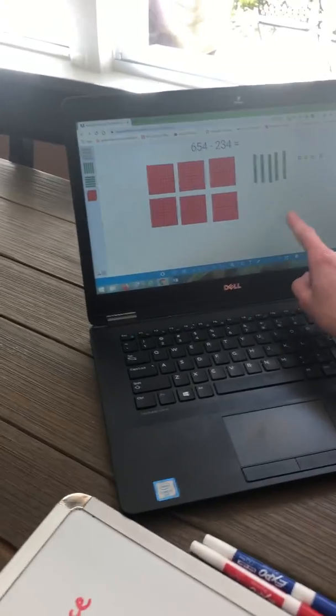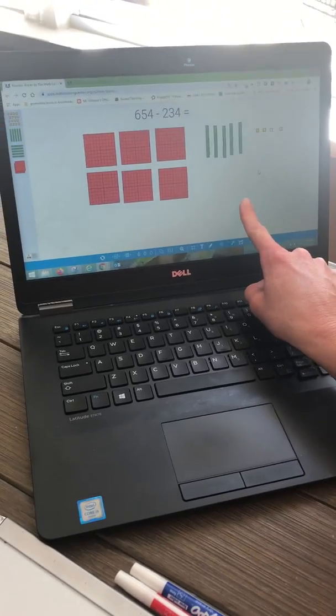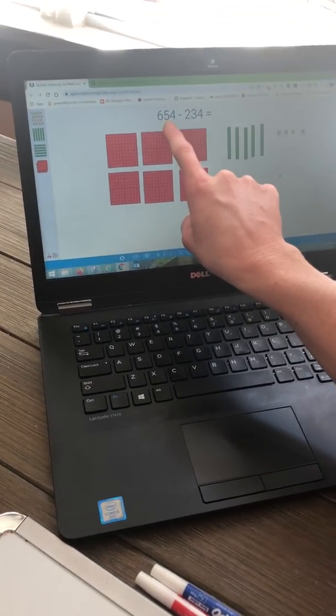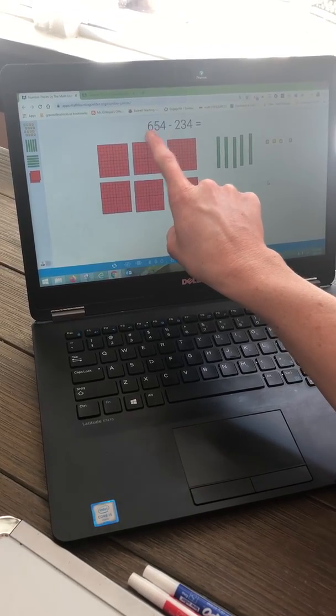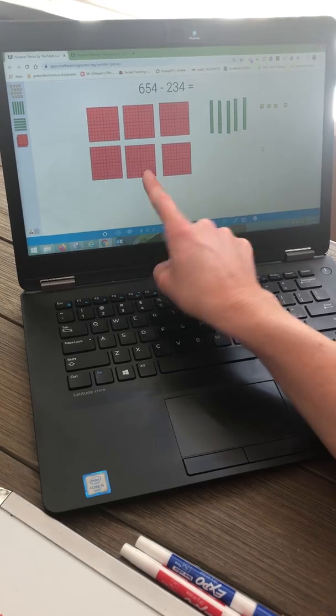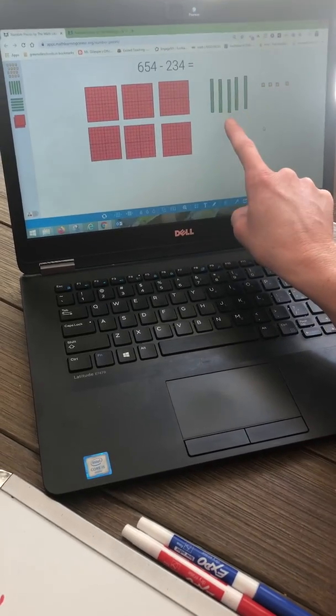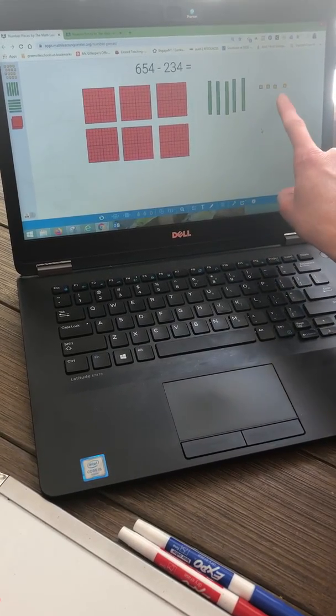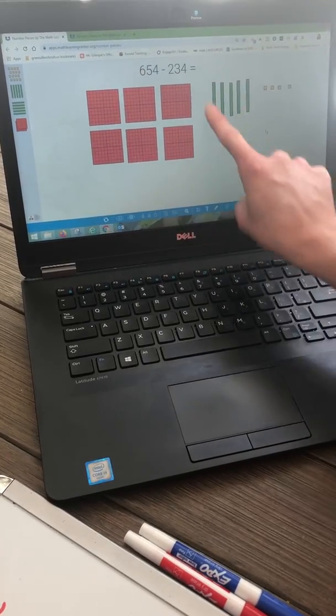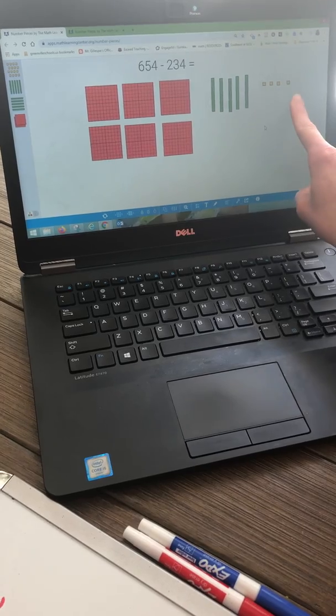So let's look at our base-ten blocks on the screen. In order to subtract, we have to start with our minuend. Our minuend is 654. So I'm going to use my flats to represent my hundreds, my rods to represent my tens, and my single units to represent my ones. I'm going to show 654. So I've got six hundreds, five tens, and four ones.